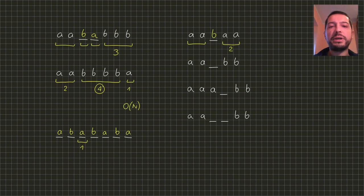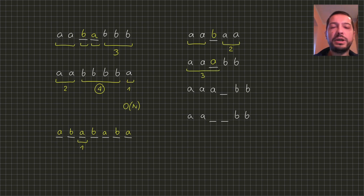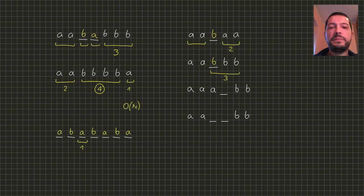However, sometimes an increase in length cannot be avoided. In the second word, no matter what letter we put into the gap, we will either extend the fragment of 2 A's into 3 A's or the fragment of 2 B's into 3 B's. So the answer will be 3.